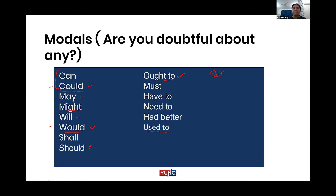Would is also used in conditionals: 'If you had told me earlier, I would have helped you.' 'If you had gone there, you would have got whatever you wanted.' There's a condition — if that condition is fulfilled, we use would. 'I know, I could have got that dress over there.' Here there's no condition — that means there was a possibility. Technically, there was a possibility: 'I could have got that.'